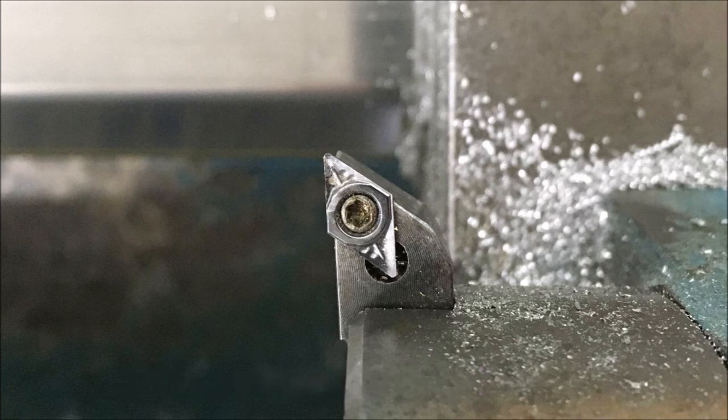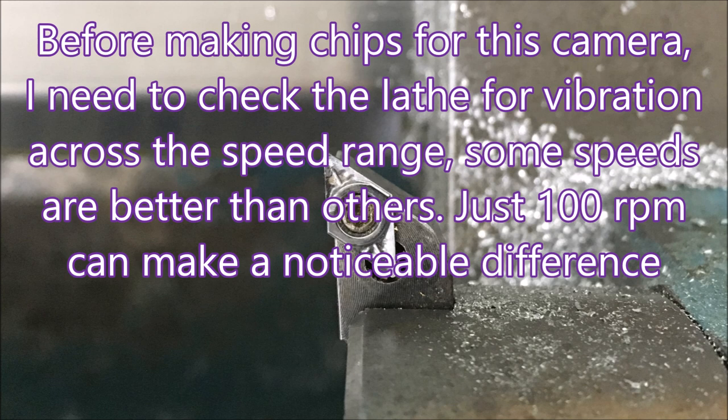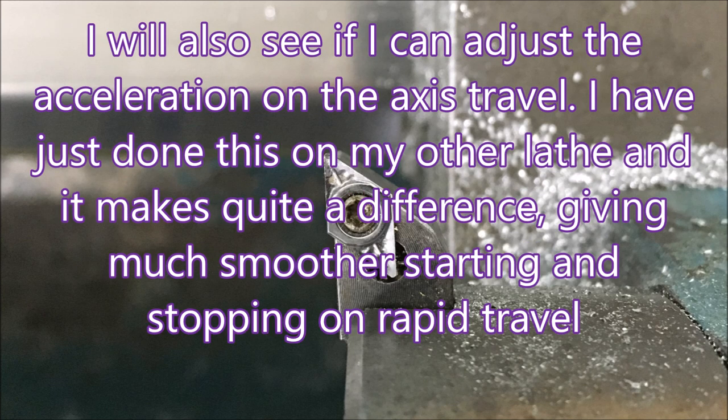There you can see the picture that the camera is seeing now. Before I make any chips with this, I've got some things I need to do. I need to check out the vibration of my lathe at various speeds, because 100 rpm can make quite a difference to how much it's rattling around. I'll also see if I can adjust the acceleration levels on the travel, see if that can help. All right, thanks for watching.